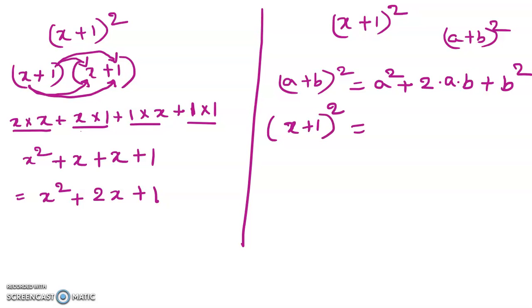So a² is x², plus 2ab where a is x and b is 1, so 2 times x times 1, plus b² which is 1².